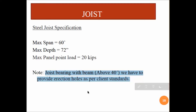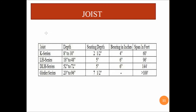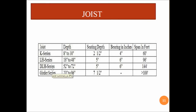This is a simple summary showing the different types of joists. For the K series, depth is 8 to 30 inches, seating depth is 2.5 inches, bearing is 4 inches, and span is up to 60 feet. The summary table also covers the LH series, DLH series, and Joist Girder series, comparing their depth, seating depth, bearing in inches, and span in feet.